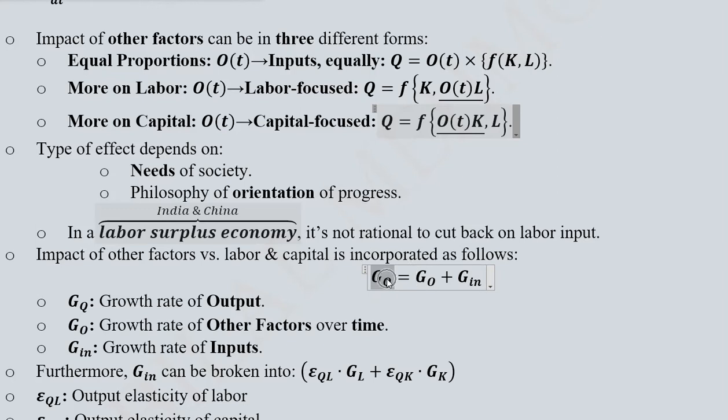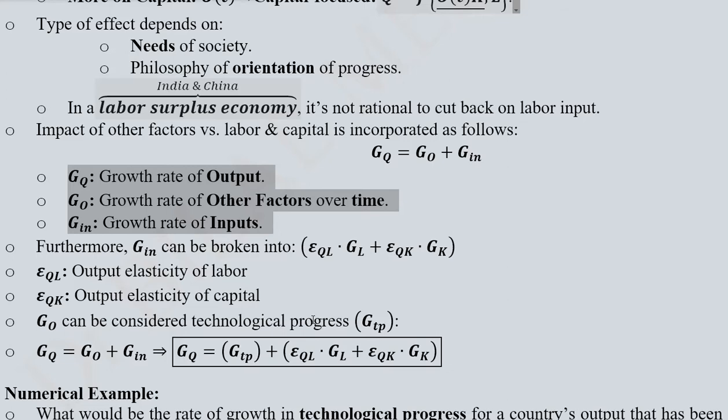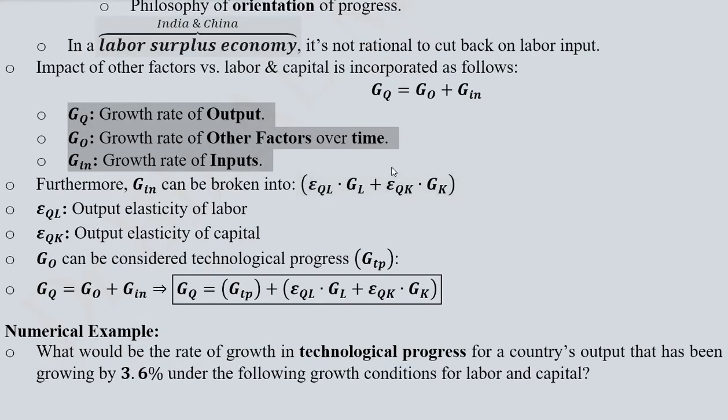This is the growth rate of the output, and it gets determined by the growth rate of other inputs—that is, O(t)—and the usual inputs, capital and labour. Here you can see the same notations are explained. You can pause the video and see these notations.